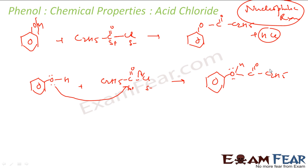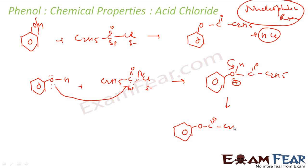After Cl minus leaves, oxygen now has a positive charge because its electrons went into forming the new bond — oxygen is electronegative and cannot hold a positive charge. So hydrogen leaves as H plus to neutralize the positive charge on oxygen. This gives us the final product O-CO-C2H5 (phenyl ethanoate). We've seen this type of reaction many times where a positive charge on oxygen causes hydrogen to leave.